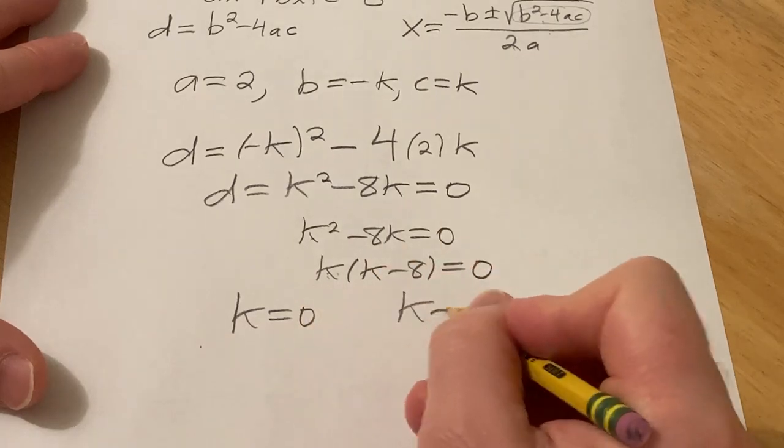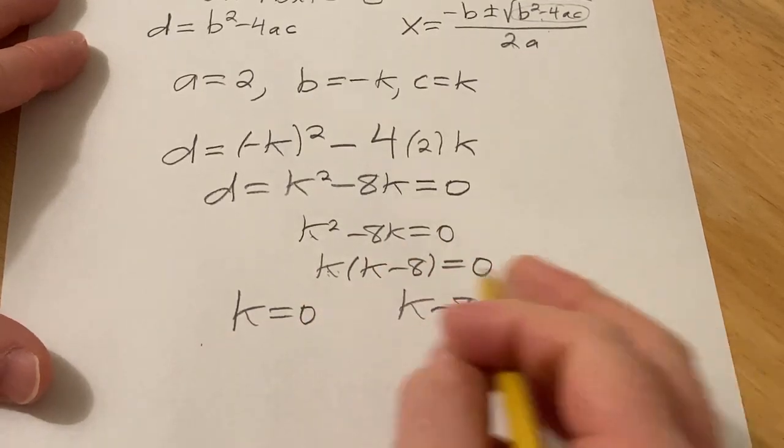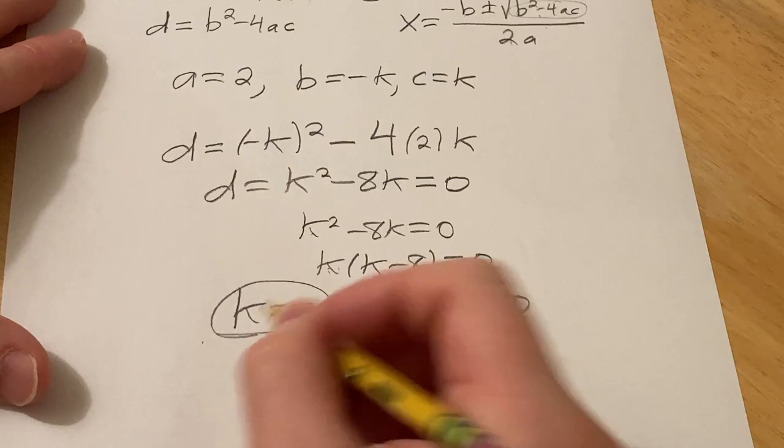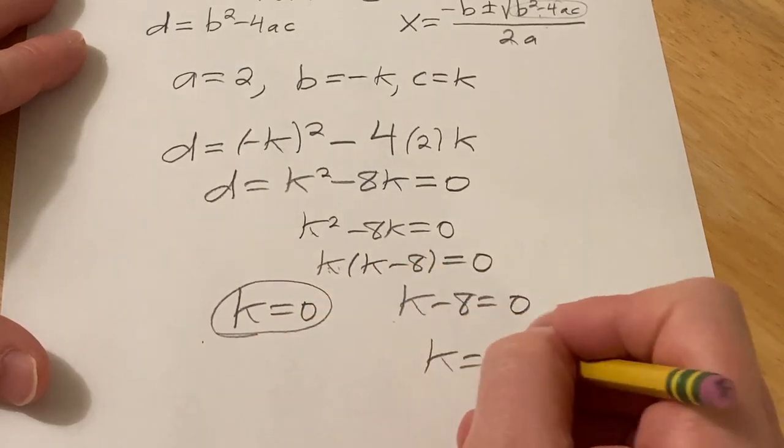So k = 0, or k - 8 = 0. So 0 is one of the values of k, and the other one here would be 8.